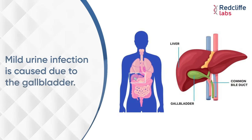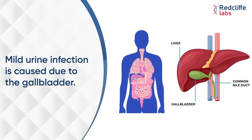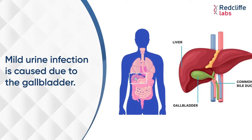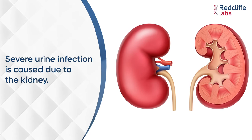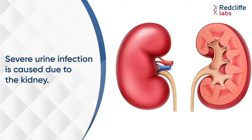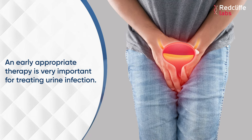Urine infection can be very severe or mild. Mild infection is when there is a bladder infection, and severe infection is when there is a kidney infection. When there is a kidney infection, it can be a very serious infection, and it becomes very necessary to give early appropriate therapy.